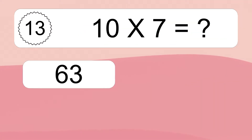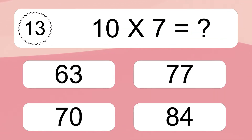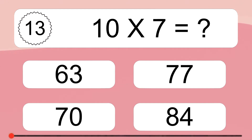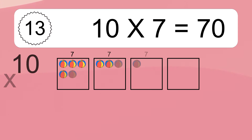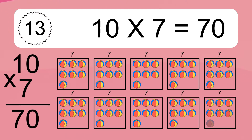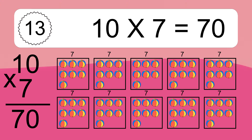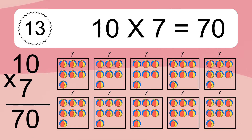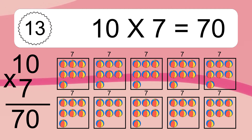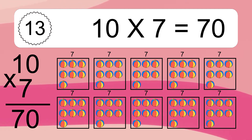Ten times seven equals 70. We have ten boxes and each box has seven colorful balls inside. If you count all the balls in all the boxes together, you will have ten times seven balls. This equals 70 balls.